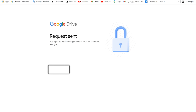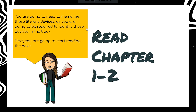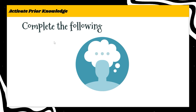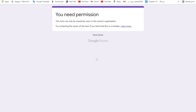Here we have some homework. Next, read chapters one and two. You are going to need to memorize the literary devices, as you are going to be required to identify these devices in the book. Next, you are going to start reading the novel.